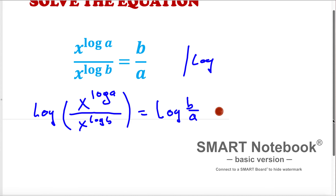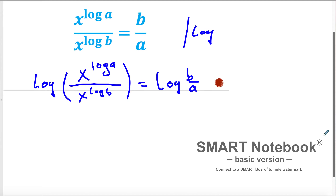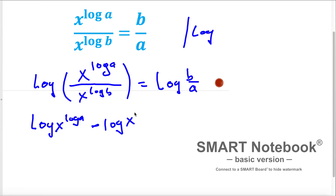According to the log's properties for division, we can write this as log of x to the exponent log a minus log of x to the exponent log b. And on the other side, using the properties of logs for division, we can write log b minus log a.